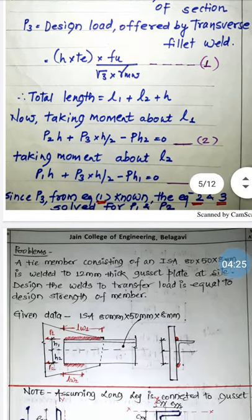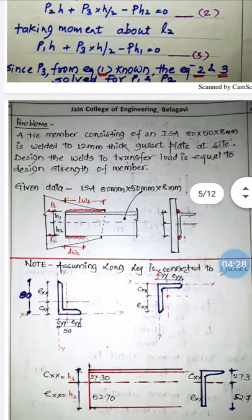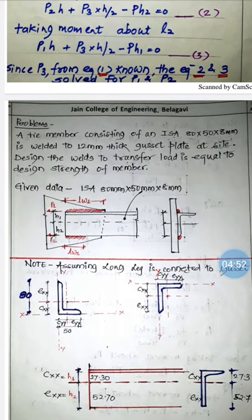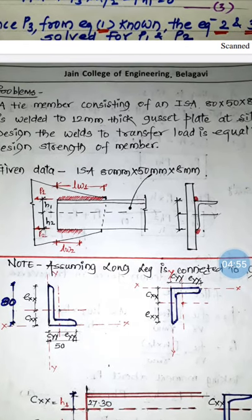Now let us solve a problem. The problem statement is: a tie member consisting of an ISA 80×50×8 angle section is welded to a 12 mm gusset plate. Design the weld to transfer a load equal to the design strength of the member. As shown in the figure, we have weld lengths lw1 and lw2 with forces p1 and p2, which must be designed to carry the design strength of the member.